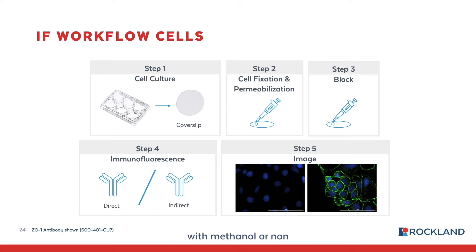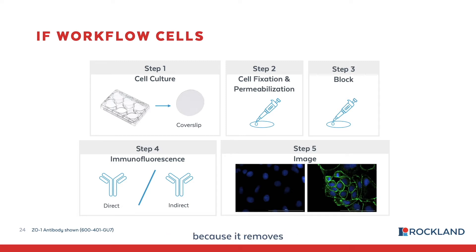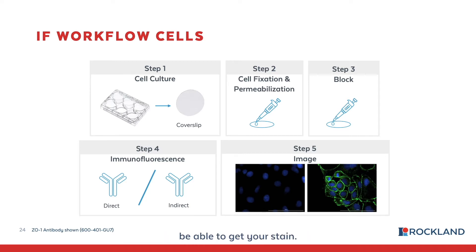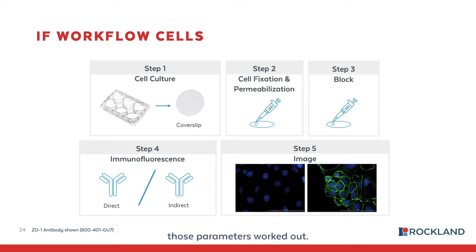Permeabilization can be done with methanol or non-ionic detergents such as Triton. This step is important because it removes cellular membrane lipids to allow large molecules — in our case, antibodies — to enter the cells. Without this step, antibodies would not be able to enter the cell and you wouldn't be able to get your stain. Both fixation and permeabilization are essential to good IF staining.